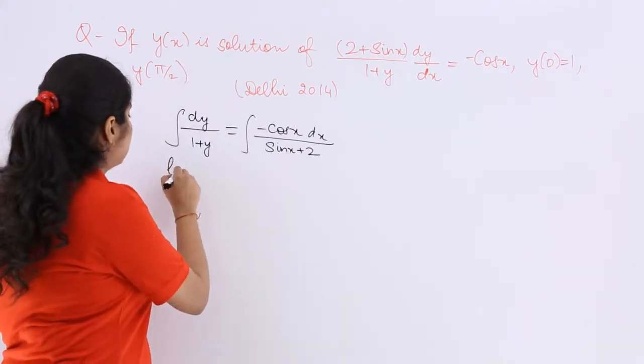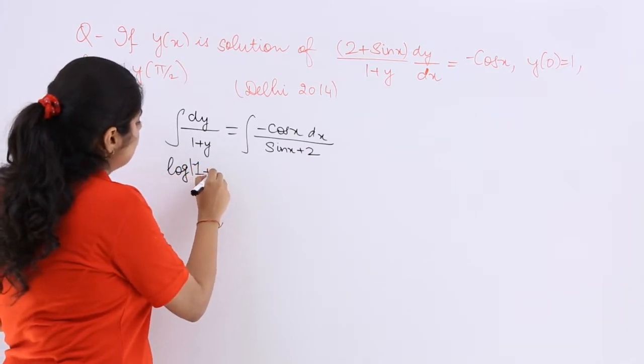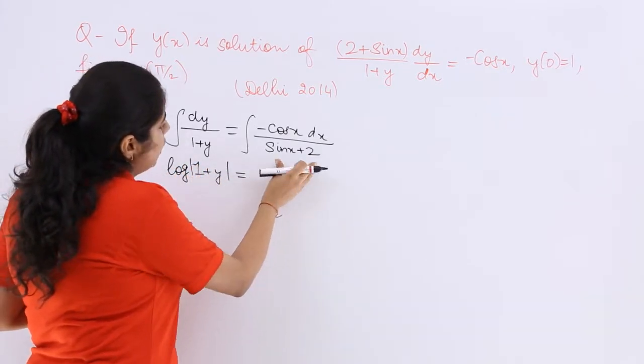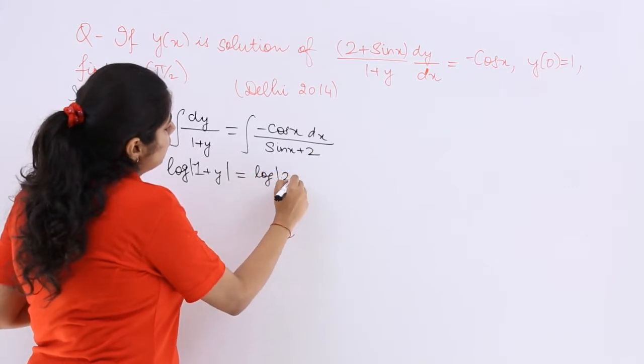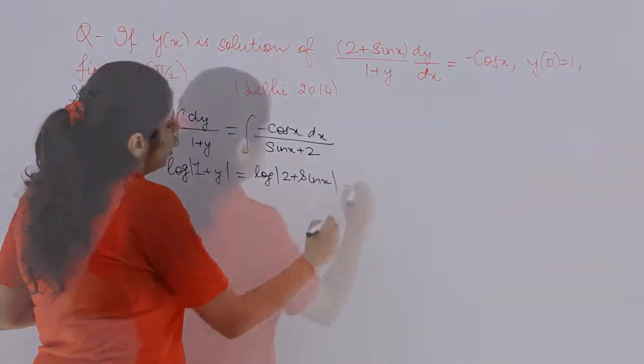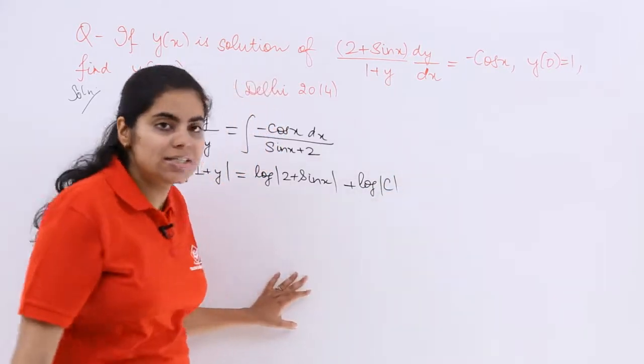So this should become like log 1 plus y, and this should become log 2 plus sin x, and let's add the constant of integration as log c.